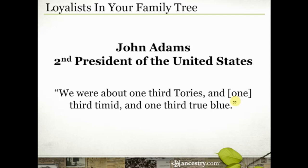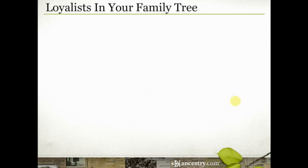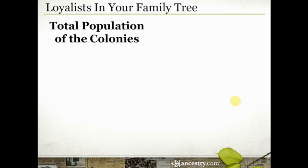A lot of times people don't choose a side in situations like that. They kind of wait to see which side's winning or they're not emotionally invested in the outcome one way or the other. So I started digging into some of the numbers as far as population — and there's still debate about some of those numbers — but I was able to put together just some broad stroke numbers. The total population of the American colonies at the time of the revolution was about two and a half million people.